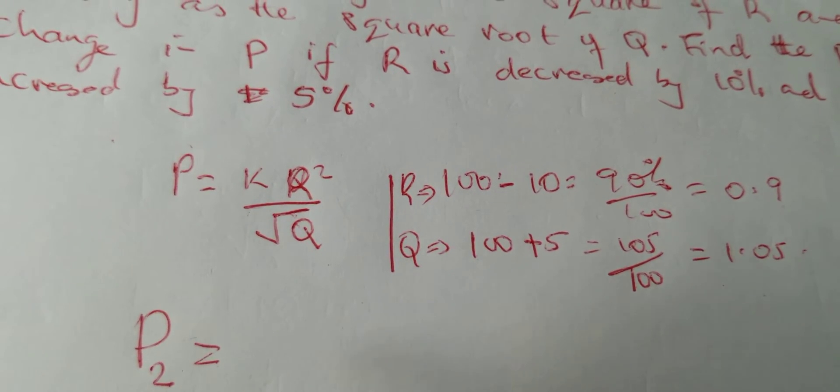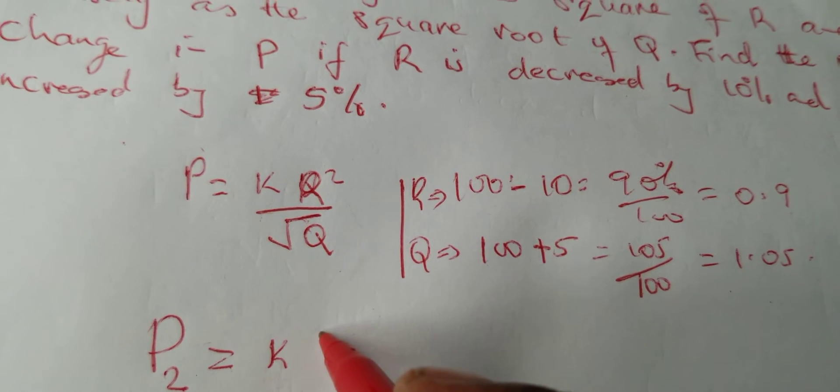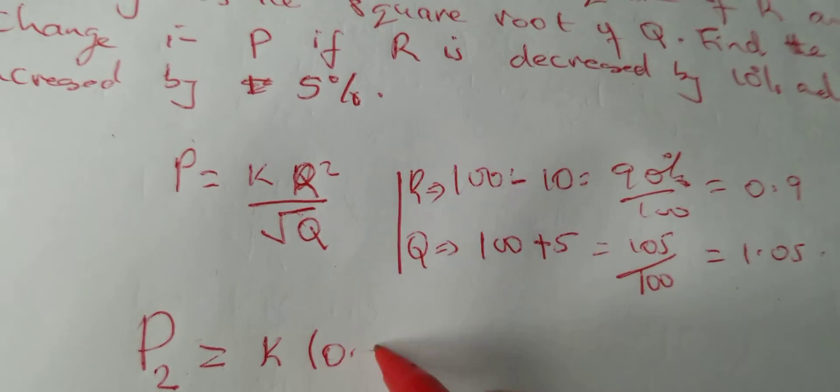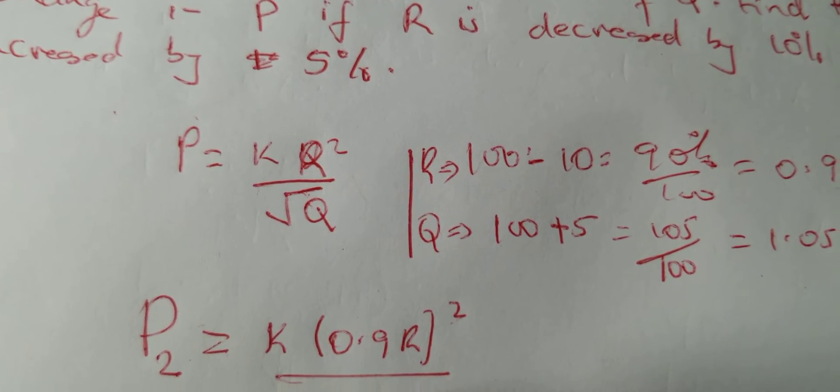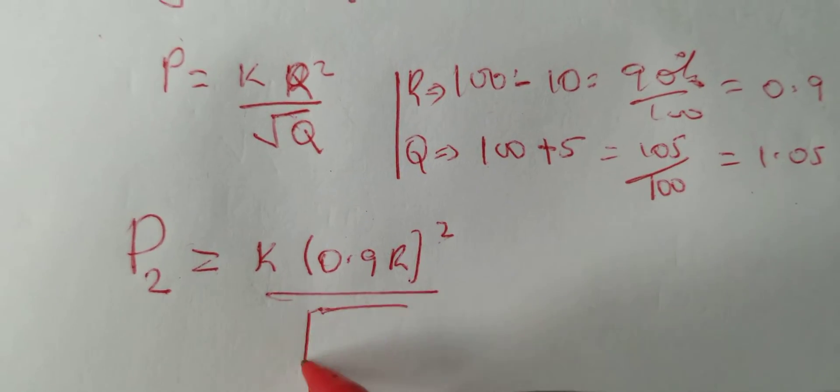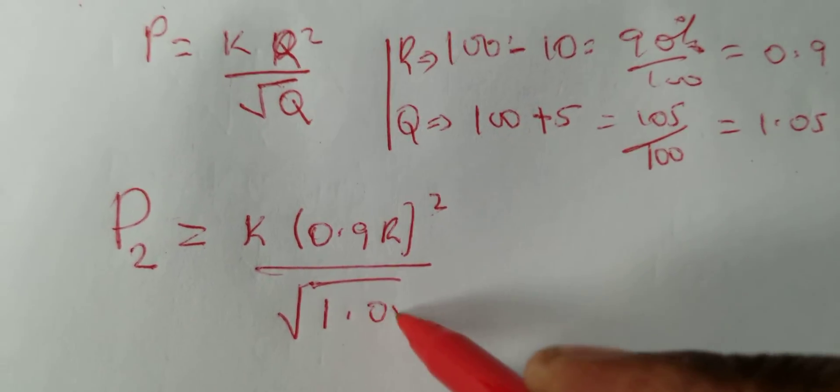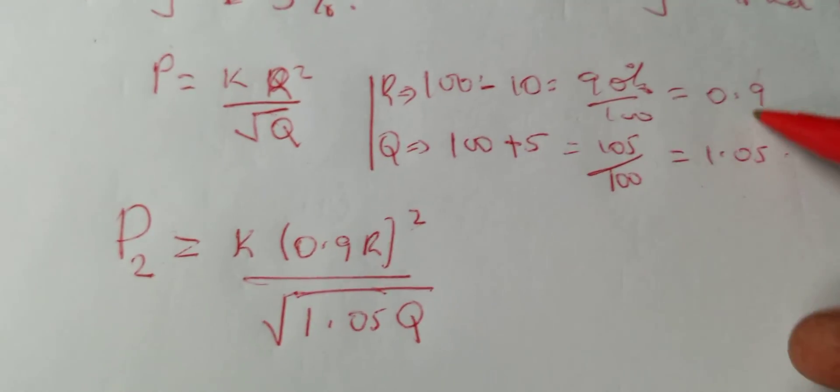Our P2, that is after the change, will be K multiply by 0.9R squared over the square root of 1.05Q. So we have factored in now the changes.